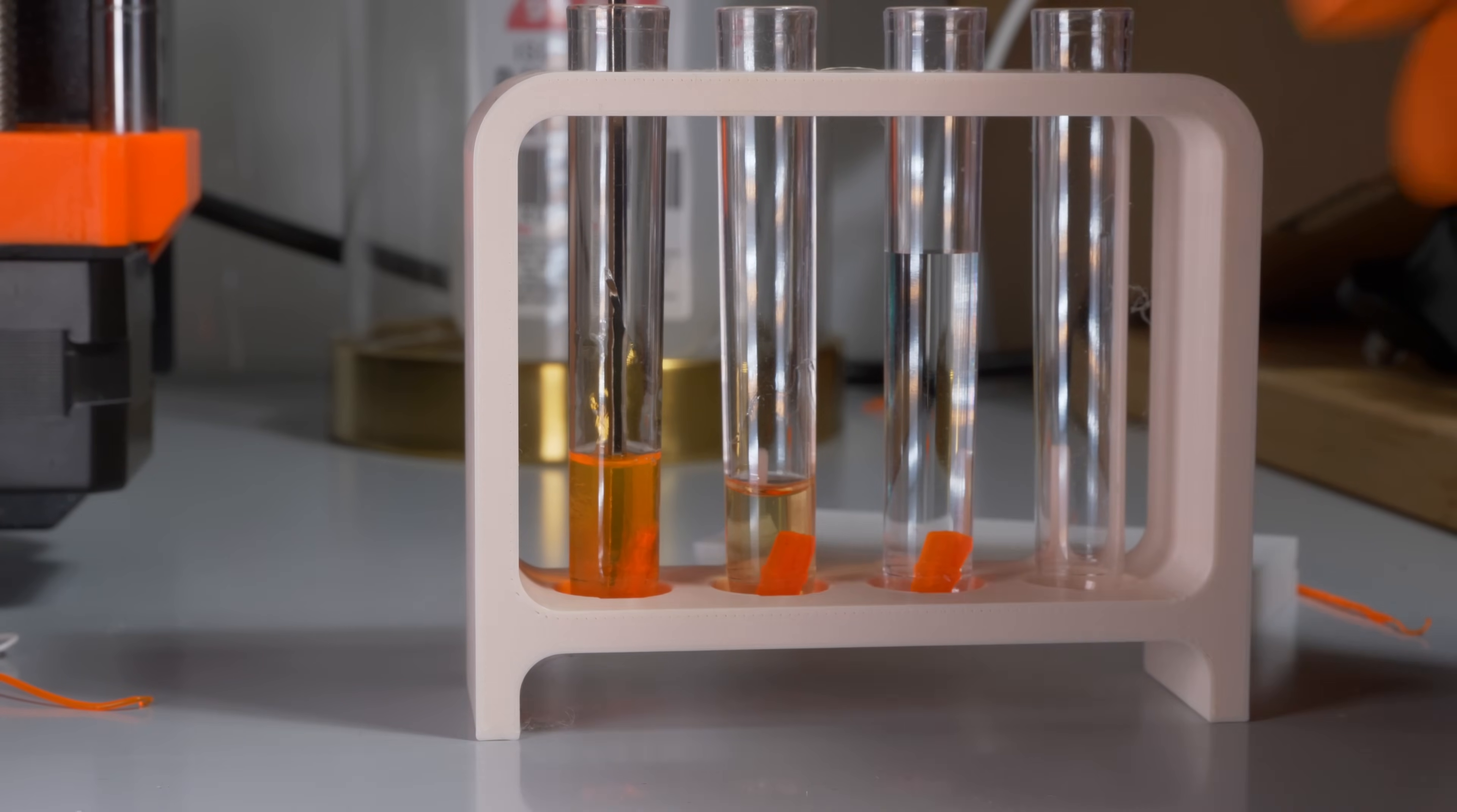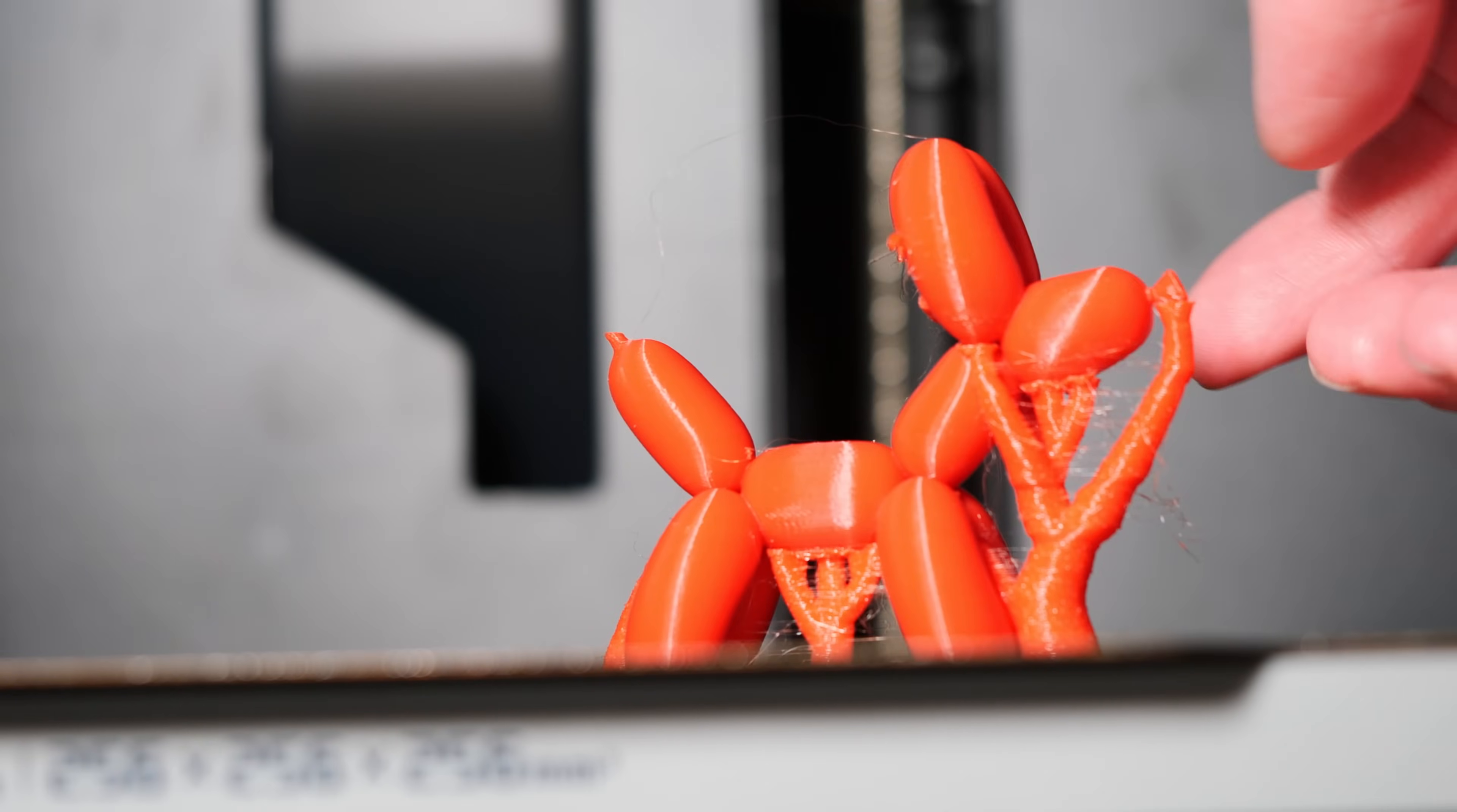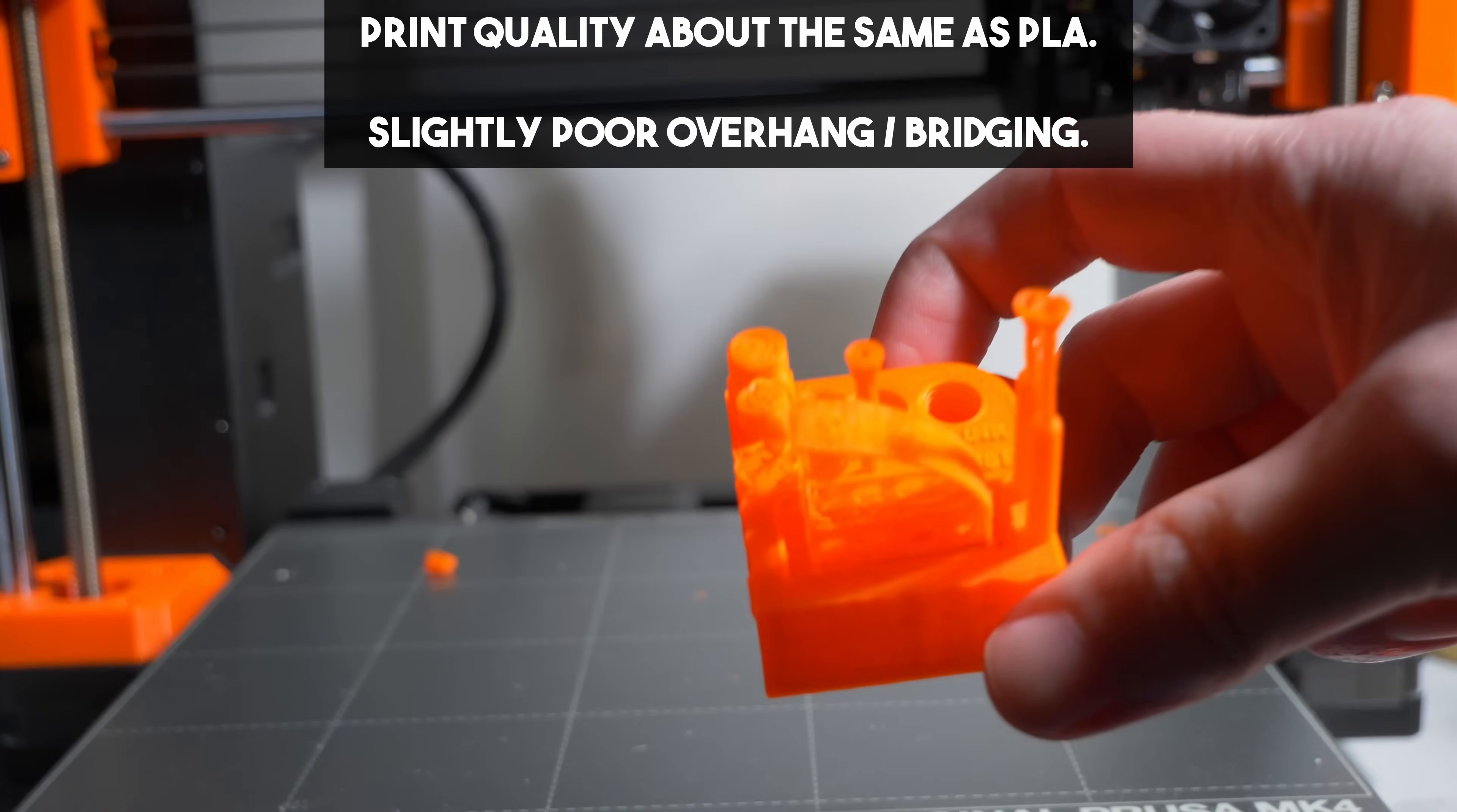For print settings, you want about 215 Celsius for a hotend temperature. The Prusament seems happier at 225, whereas the red stuff prefers closer to 205, somewhere between 200 and 225 Celsius. For bed temperature, it is imperative you have the bed at about 80 degrees C for the first layer. If you don't, you'll be making spaghetti. It will not stick to the bed.